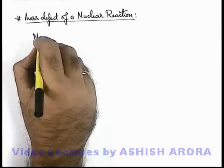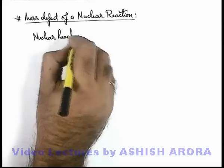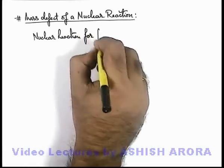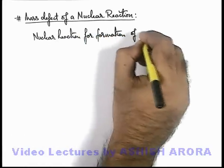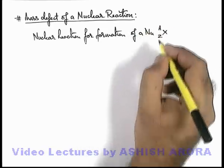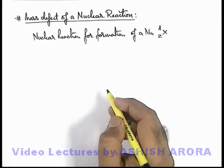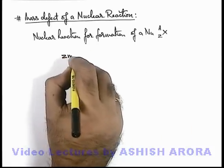As we've discussed about nuclear reactions for formation of a nucleus of element X, which has atomic number Z and mass number A, this we can write as Z times mp